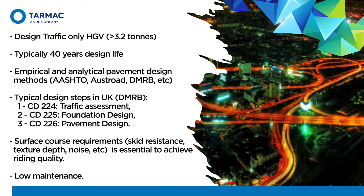Typically here in the UK, the Design Manual for Roads and Bridges, known as the DMRB, is used for the design of highways and motorways, including CD-T24 for traffic assessment, CD-225 for the foundation, and CD-226 for the overall pavement thickness required. These were released in 2020 as an update to the DMRB. In terms of surface requirements, skid resistance, texture, and noise are very essential and need to be considered in the design.